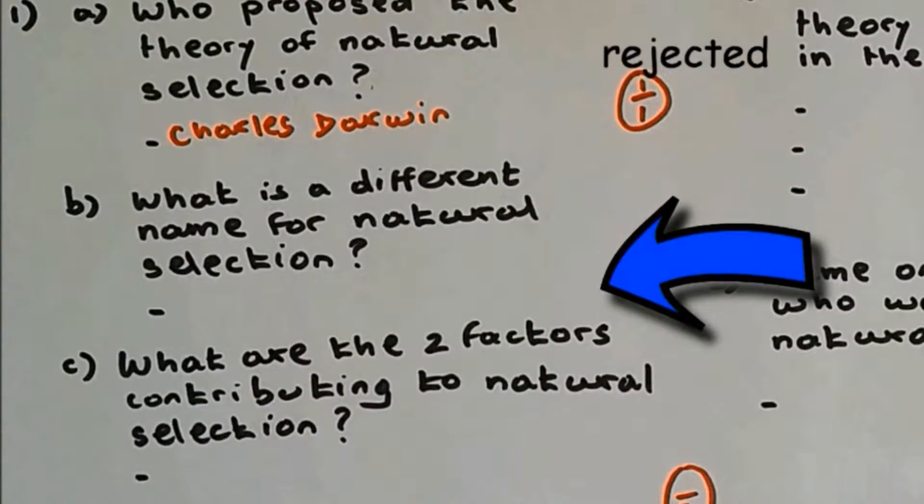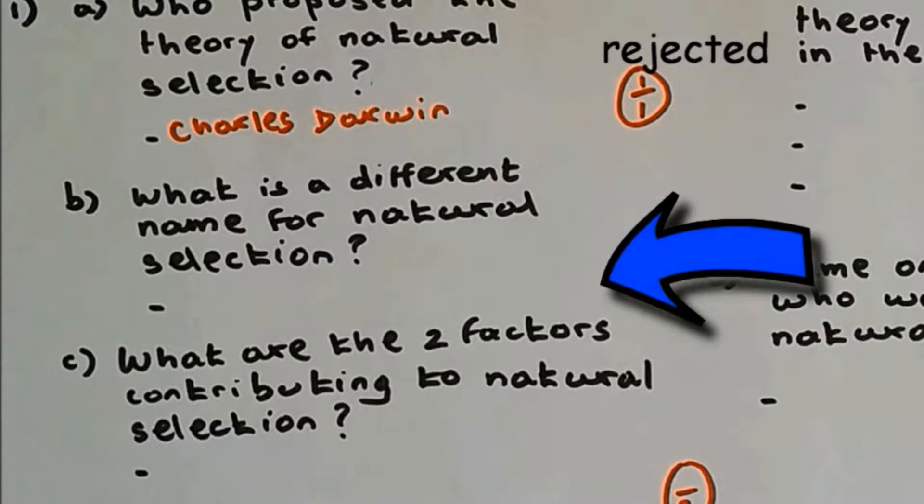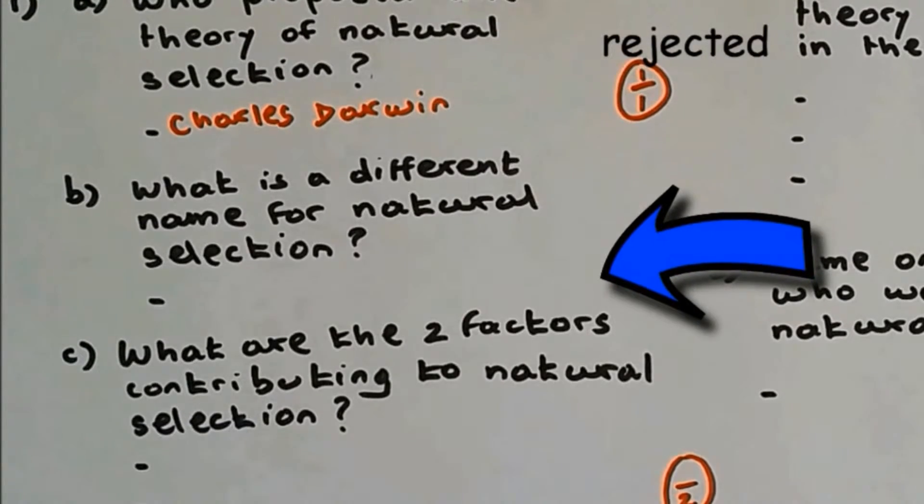What is a different name for natural selection? The different name for natural selection is survival of the fittest.